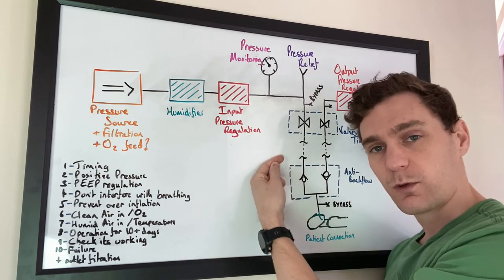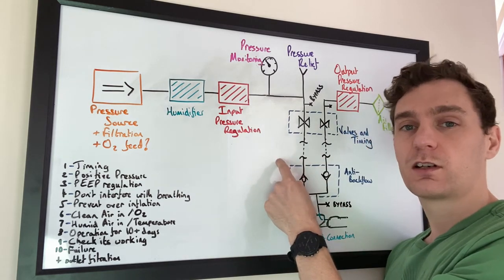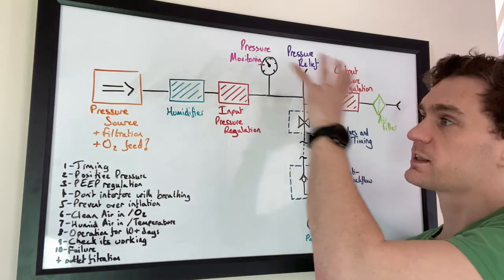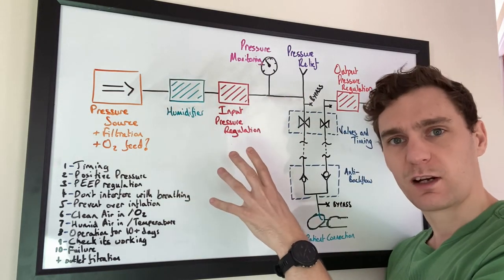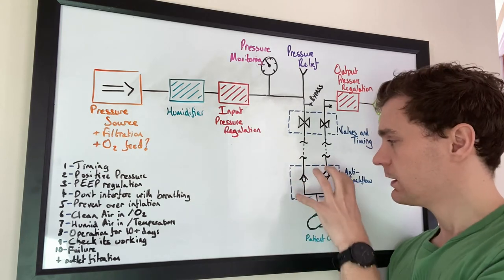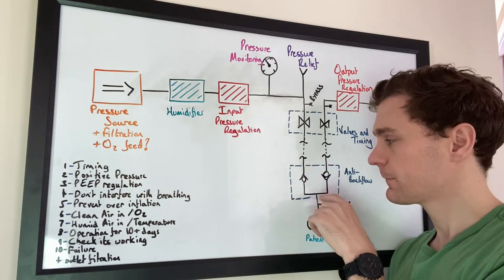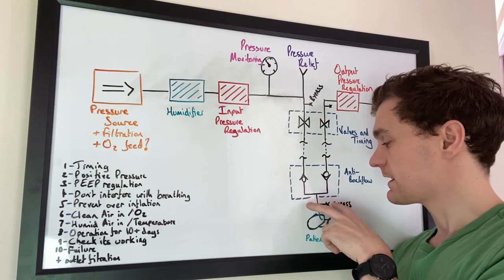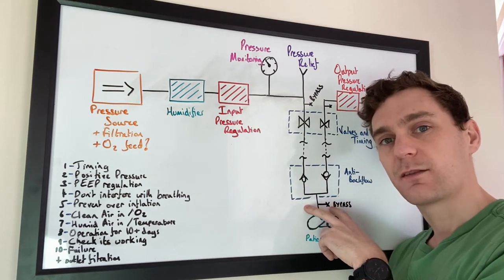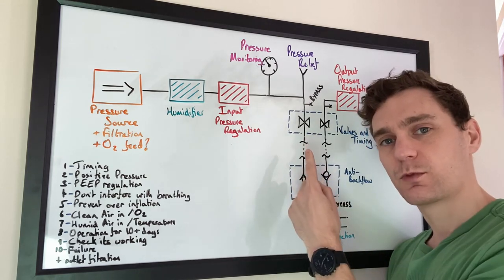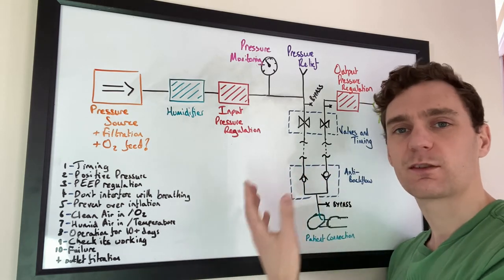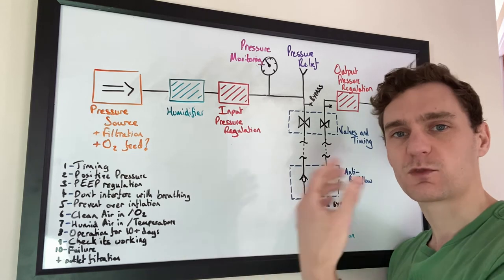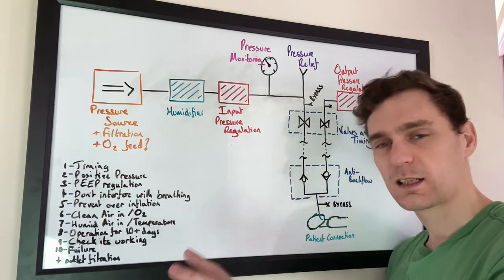Here we have this extended tubing run. This tubing run allows us to have all of this equipment a long way from the patient, relatively long way from the patient, perhaps a few feet, and only this section close to their face. The anti-backflow section prevents air from flowing back up those tubes and just cycling air in and out of the tubes rather than providing fresh air to the lungs so that the patient can absorb that oxygen and expel the CO2.